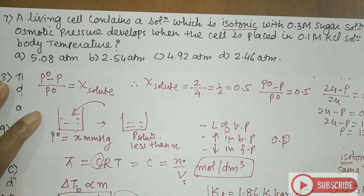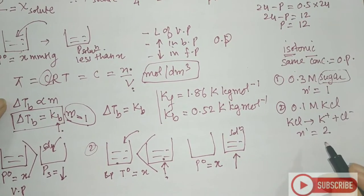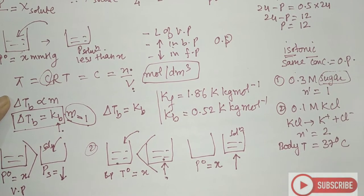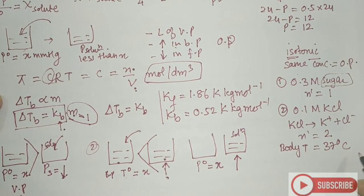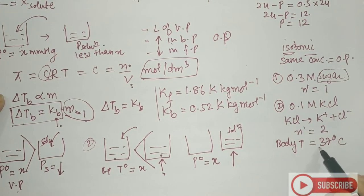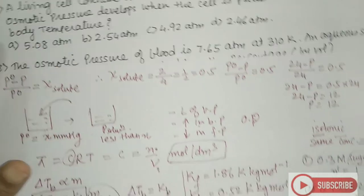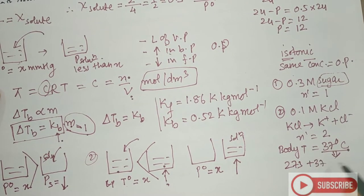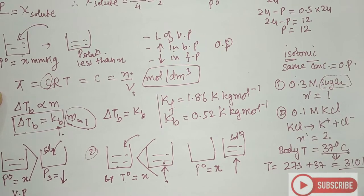They ask what osmotic pressure develops at body temperature. Body temperature is 37°C, which converts to 310 K. The total osmotic pressure formula uses π = iCRT. We calculate for the sugar solution minus the KCl solution, taking R = 0.082 L·atm·mol⁻¹·K⁻¹ since options are in ATM.